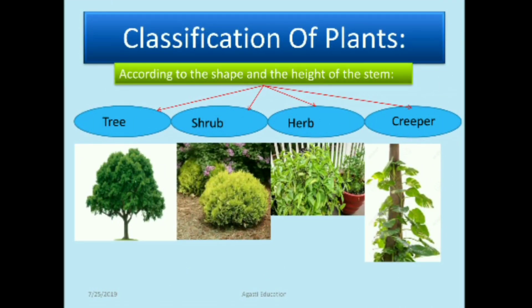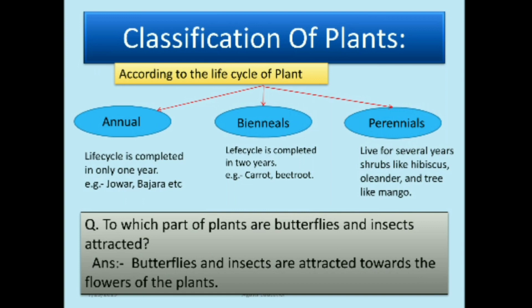Example pictures of trees, shrubs, herbs, and creepers are shown. The next classification is according to the life cycle of the plant. Plants are divided into three types: annual plants (life cycle completed in one year — e.g., jowar, bajra, rice), biannual plants (life cycle completed in up to two years — e.g., carrot, beetroot), and perennial plants (live for several years — e.g., shrubs like hibiscus and oleander, and trees like mango and banyan).